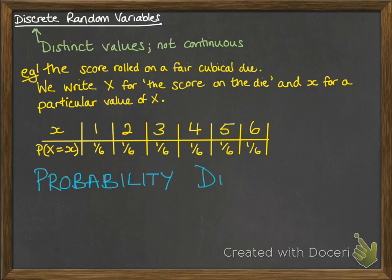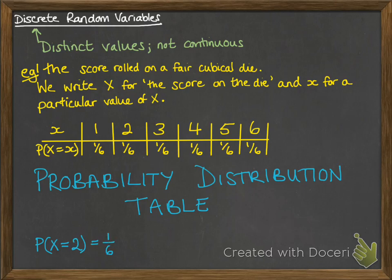This here is called a probability distribution table. And you can read things off of it, and we would write things down like the probability that x is 2, like this. So the probability that our capital letter X is that particular value of 2, is 1/6. And we also know that those probabilities have to add up to 1.